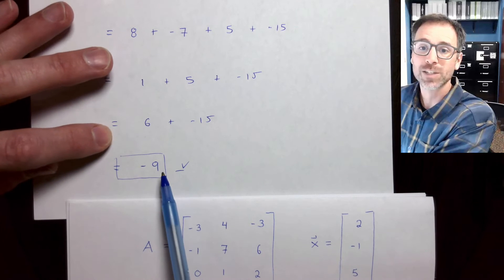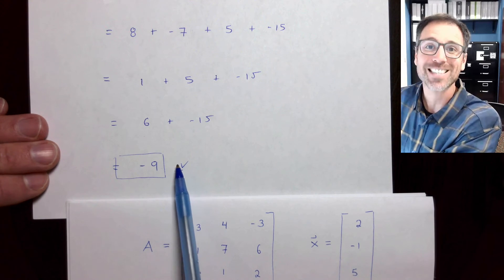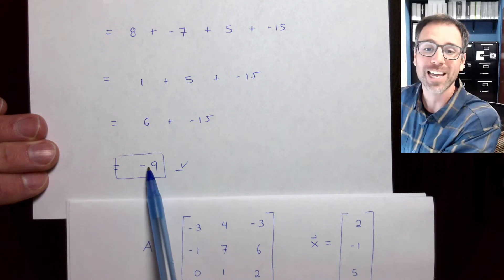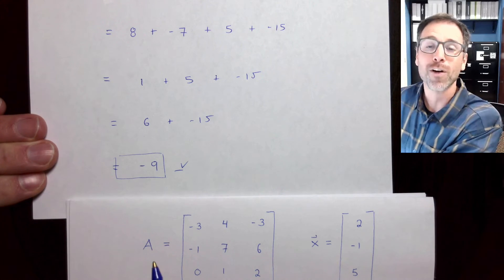Here, I've got 8 plus negative 7 is 1 plus 5 is 6. 6 plus negative 15 is going to be negative 9. So my guess that the second entry of our vector is negative 9, I've actually verified where I got that from.